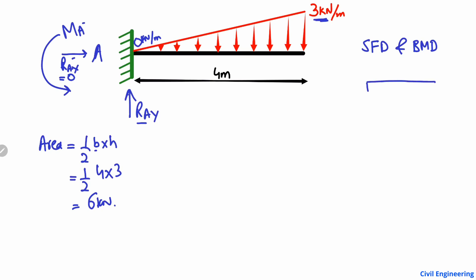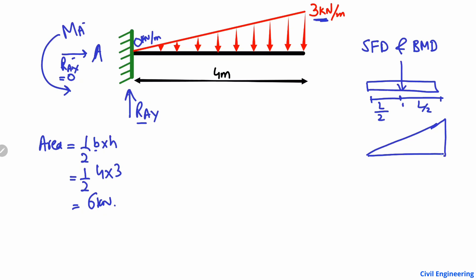After finding the area, the resultant load acts at the centroid of the load diagram. For a rectangular load, it would act at L/2. But in our case we have a triangular load, so the centroid is at one-third of L from the higher side and two-thirds of L from the lower side — the side where the load starts from zero.